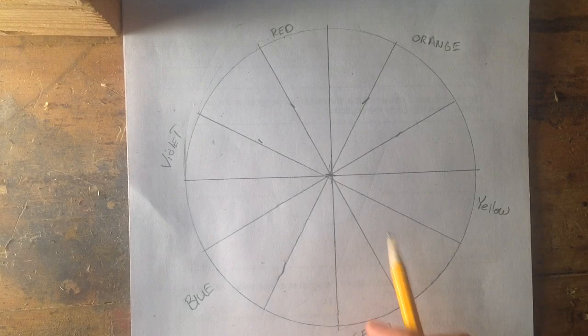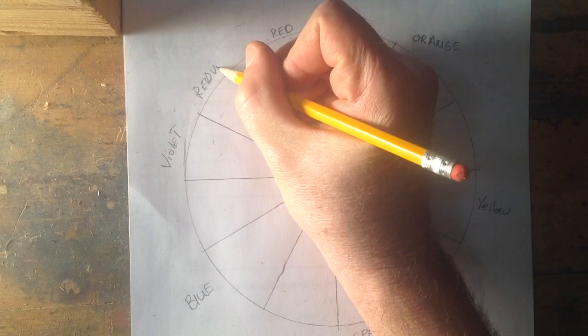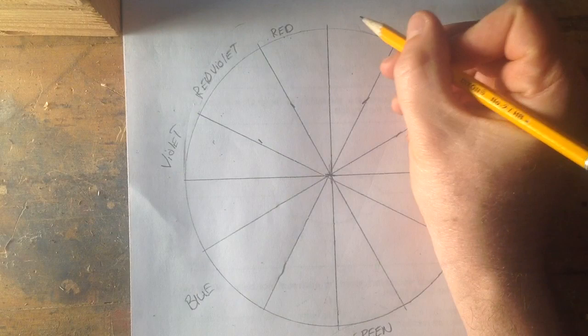Tertiaries like I said are pretty easy because the words for the tertiary colors are just mixes of the primary and the secondary. So red, violet, because they're right next to each other. Red, orange.